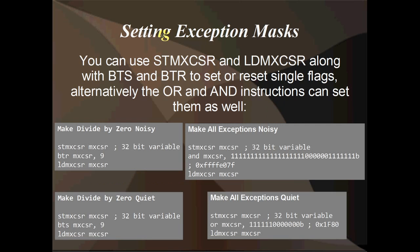So, a quick example of setting exception masks — this is how you make exceptions noisy or quiet. You use STMXCSR and LDMXCSR instructions, that's Store MXCSR and Load MXCSR, along with BitTest and Set and BitTest and Reset instructions to set particular bits on and off. BitTest and Set sets a bit to 1, and BitTest and Reset sets a bit to 0. Alternatively, you can set a whole bunch of bits at the same time using standard Boolean operations like OR and AND.